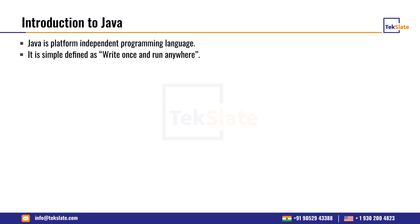So what is Java? Java is a platform independent programming language. In simple words, we can define Java as 'write once and run anywhere.' What do you mean by platform independent programming? What do you mean by write once and run anywhere?